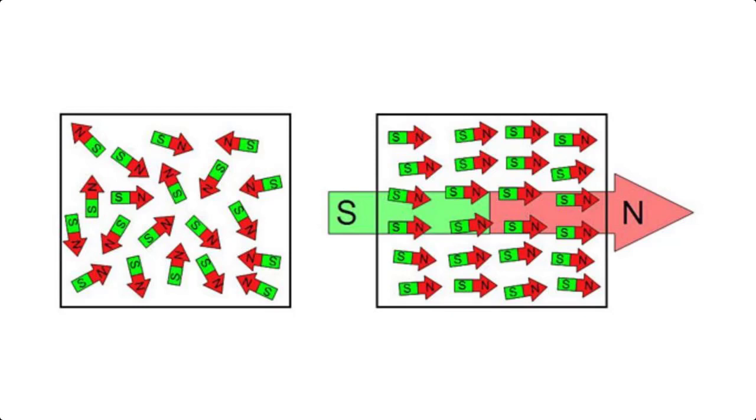When a current is passed through the coil wrapped around the core the magnetic domains line up parallel with the magnetic field due to the coil increasing its strength.